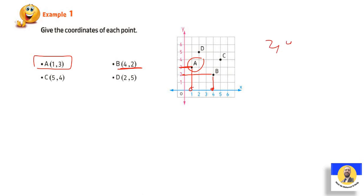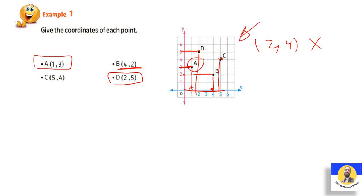Can we write (2, 4) instead of (4, 2)? No — (2, 4) is a completely different location. Letter C is (5, 4): we move five on x then go up to four. And point D is (2, 5). These are all the points with their ordered pairs on the coordinate plane.